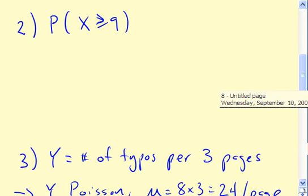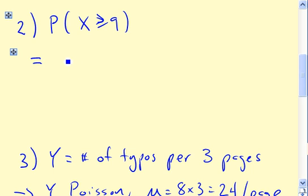Alright, what about number 2? Well that asks essentially what's the probability that x is greater than or equal to 9, right? That we have at least 9 typos on a given page. Now the cumulative feature of the Poisson function will handle a situation almost like this, but first we have to flip the probability around so that it's x less than or equal to some value. And let's see here, well that's not too hard. We do have to be a little bit careful because this is a discrete distribution.